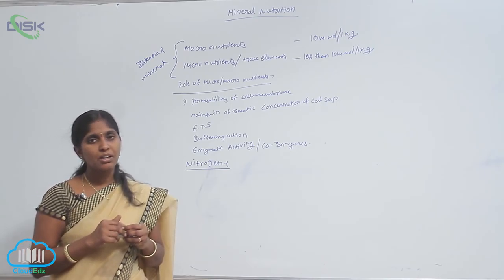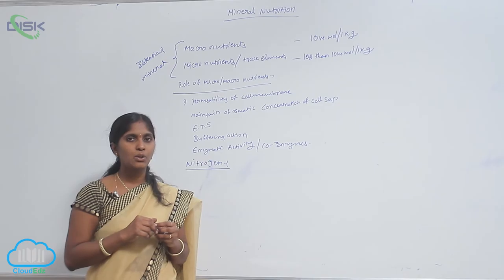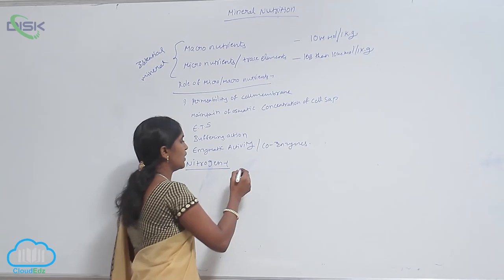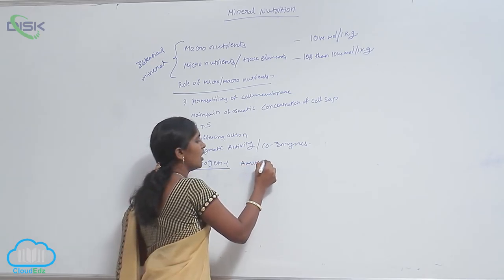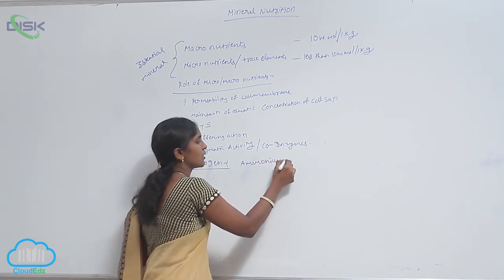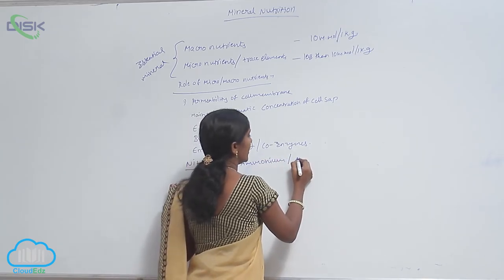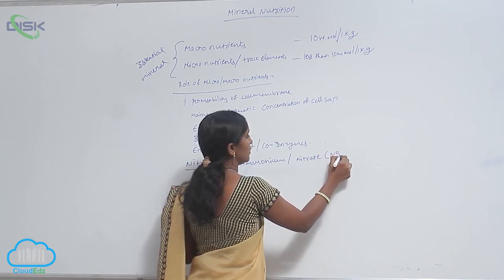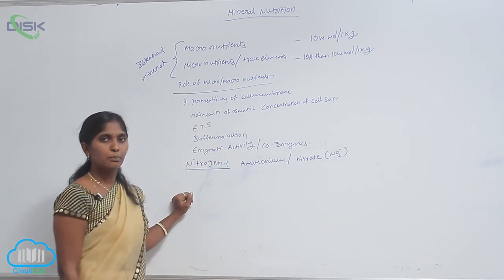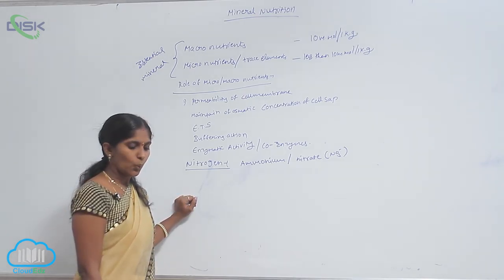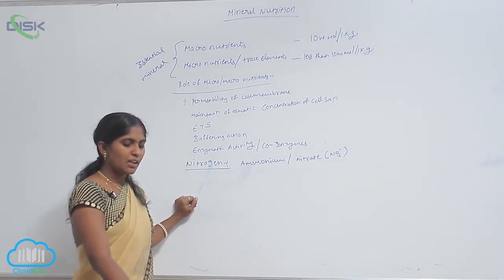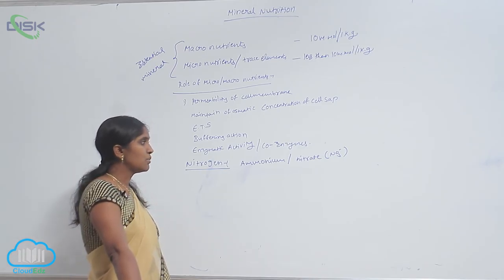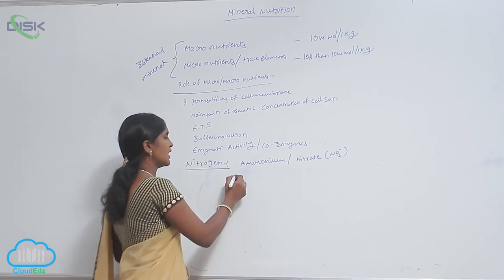What is the available form of nitrogen to the plant? Plants can absorb nitrogen in the form of ammonia or nitrate, NO3 minus. The plant absorbs mainly as nitrate, and sometimes also absorbed as nitrites.